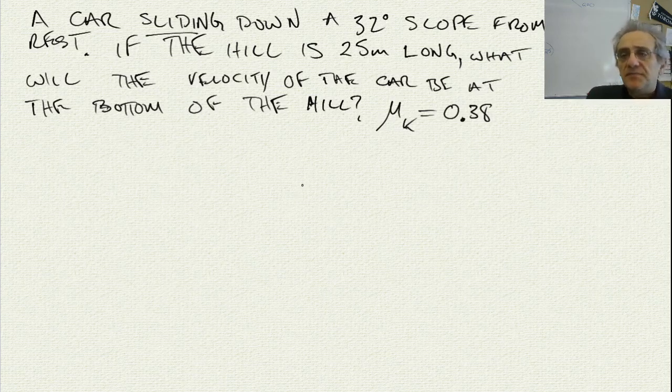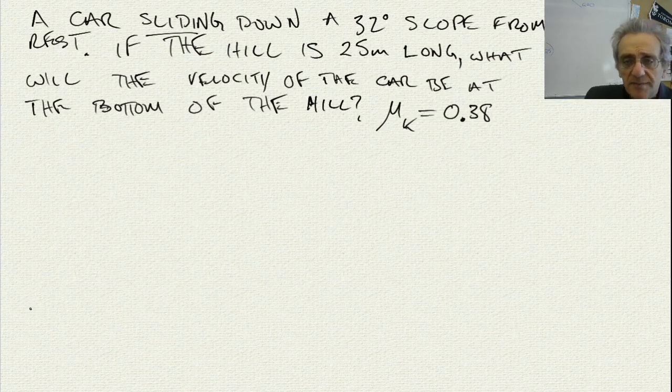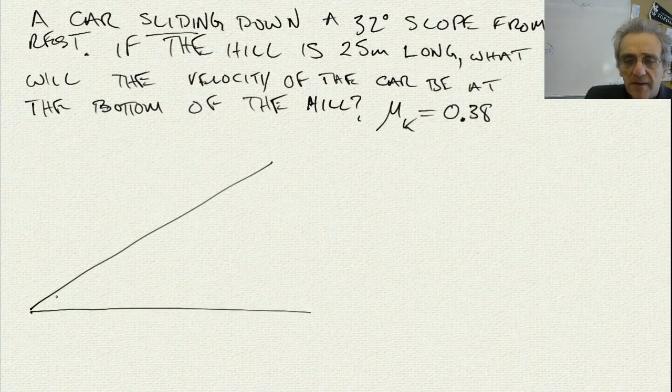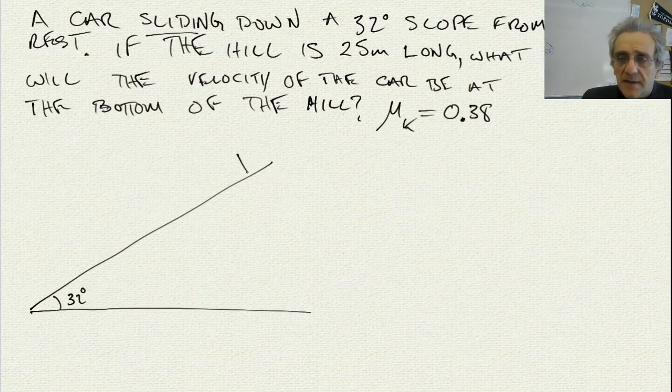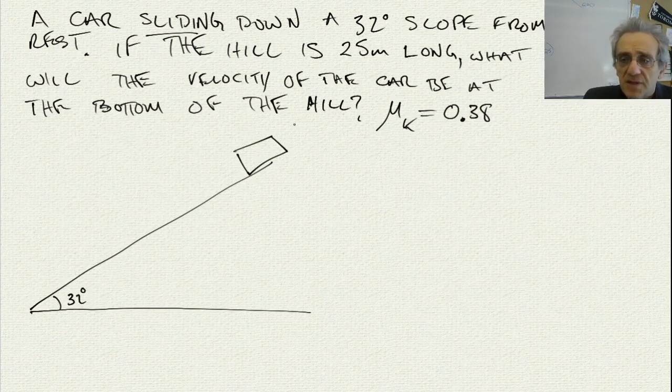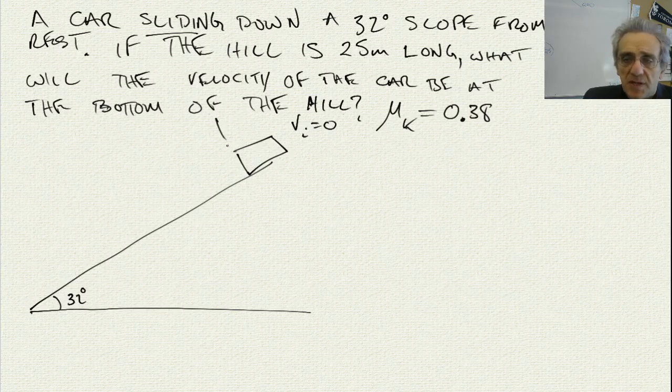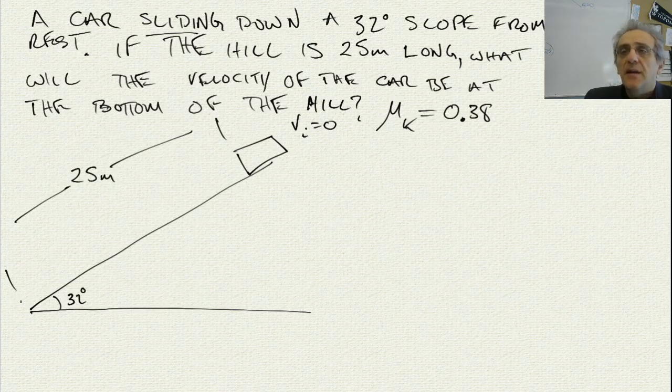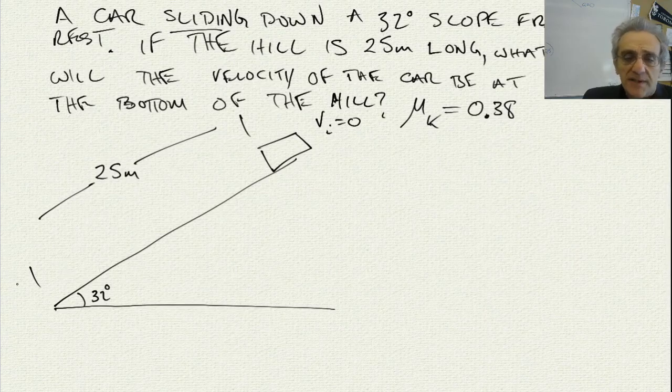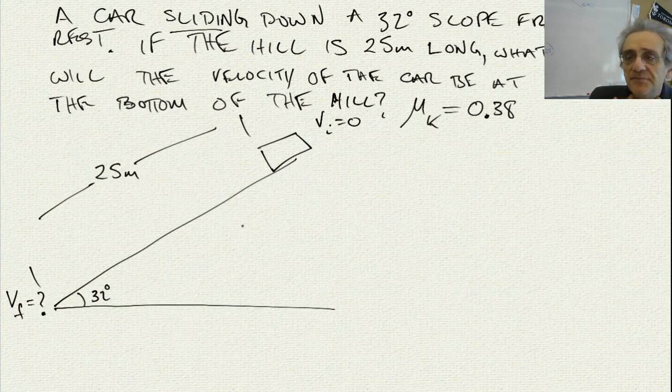So the wheels are locked. Let's draw a little picture here of what's going on. Here's the slope. We've got 32 degrees. And the car is here at the top. The car starts from rest so the initial velocity of the car is zero. And the distance between here and here is 25 meters long. So when it gets to the bottom of the hill, what we want to know is what's the final velocity? And we are given mu k is 0.38.